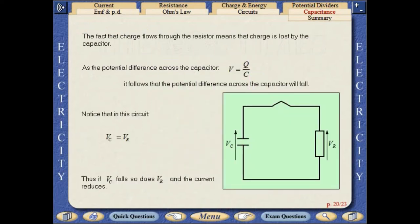The fact that charge flows through the resistor means that charge is lost by the capacitor. As the potential difference across the capacitor V equals Q over C, it follows that the potential difference across the capacitor will fall.